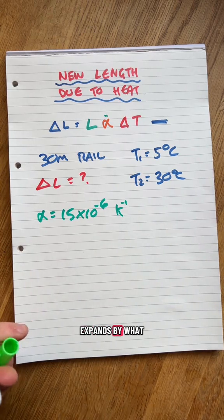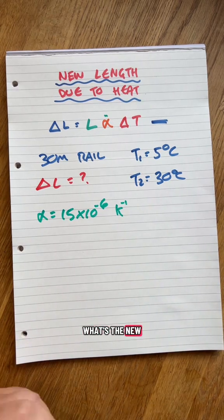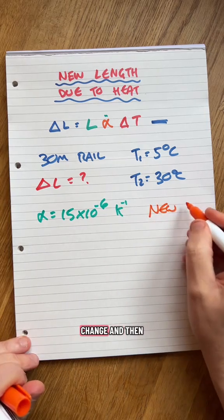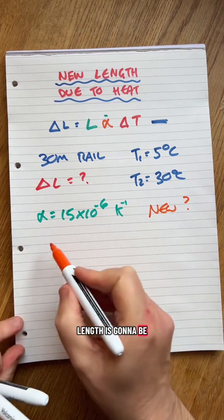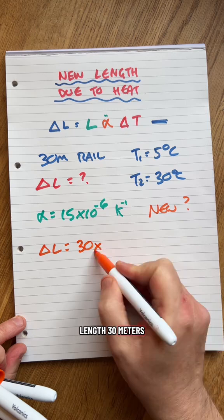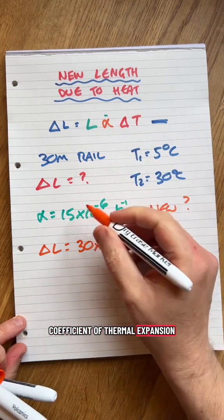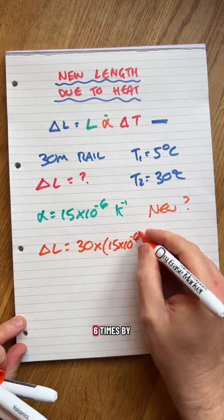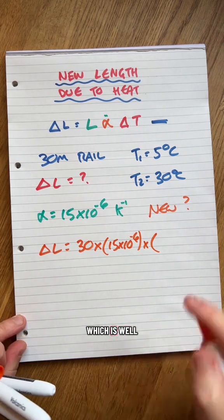How much it expands by. What is the new length? What's the new length? I'm going to find the change and then add it on. So the new length is going to be, here look, length 30 meters times by the coefficient of thermal expansion 15 times 10 to the minus 6 times by the difference in temperature which is 25.